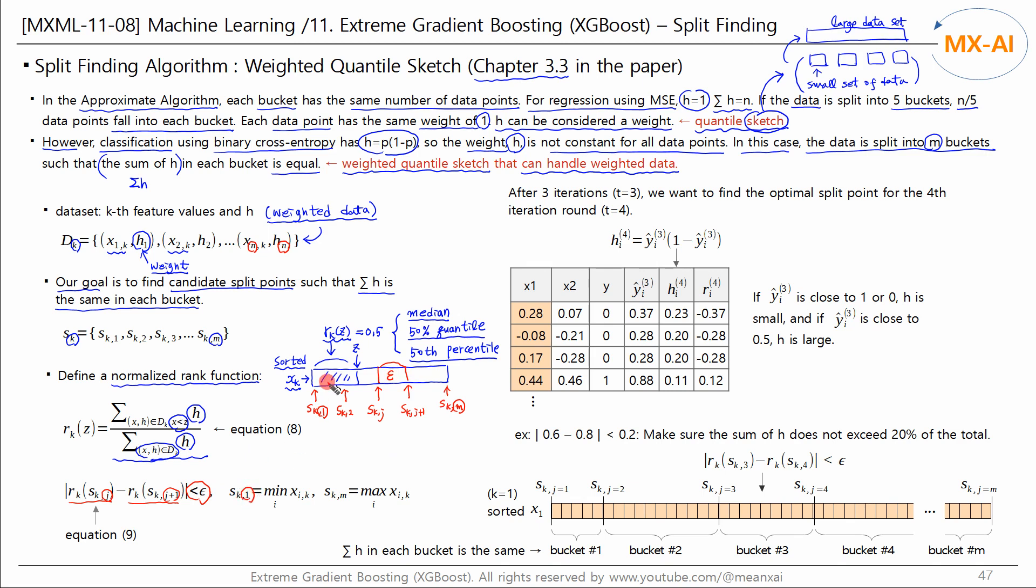The first sk value is the smallest x value. This is because x is sorted in ascending order. And the last sk value is the largest x value. Now let's look at the data on the right. There are two features x and one target y. After the third iteration, we want to find the optimal split point for the fourth iteration. And the predicted probability in the third iteration is like this. h is the value calculated using the formula above.